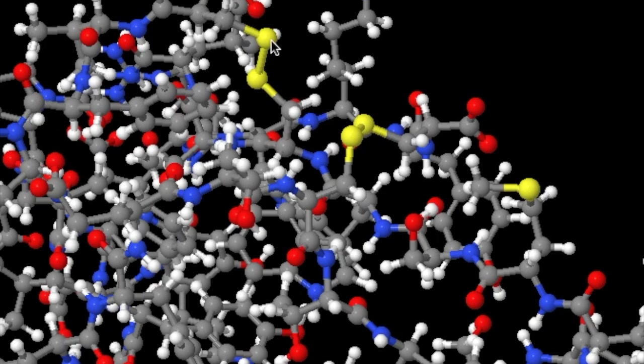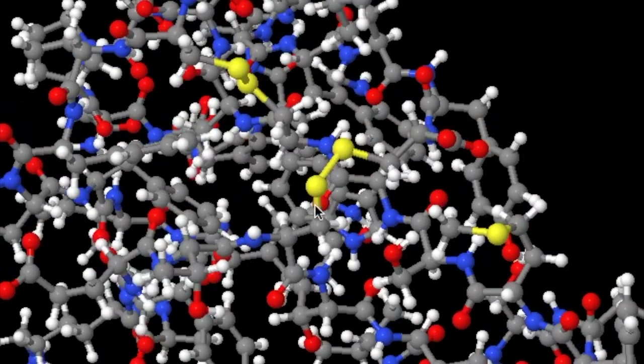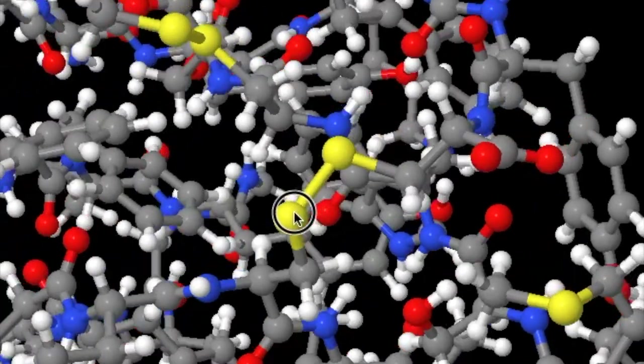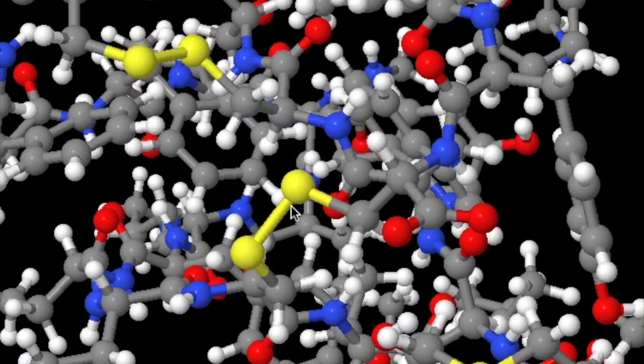The four cysteines involved in forming the disulfide bonds and as part of the collagen binding region is represented by the four yellow atoms located in the center of this protein structure.